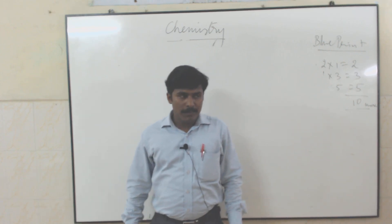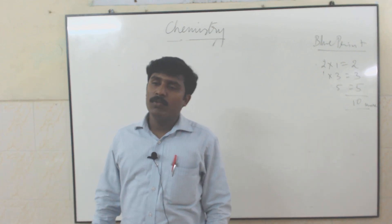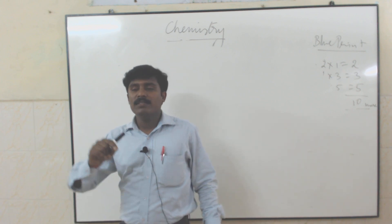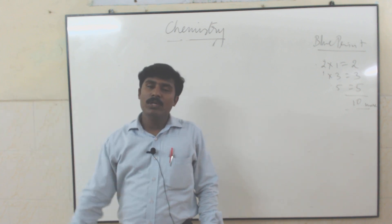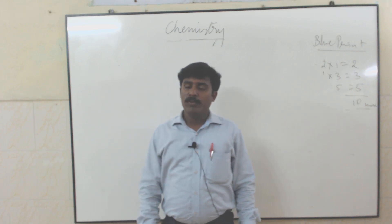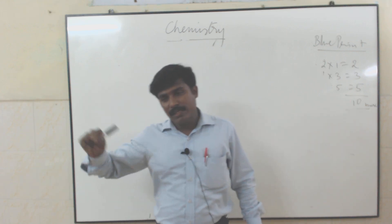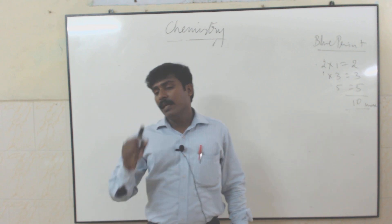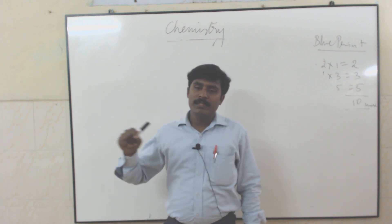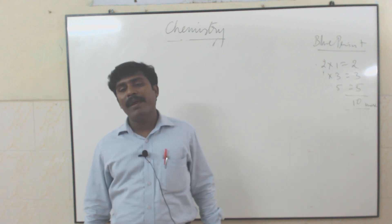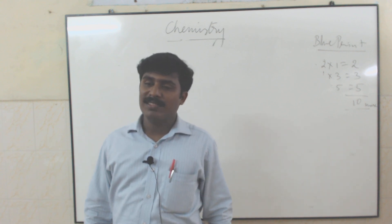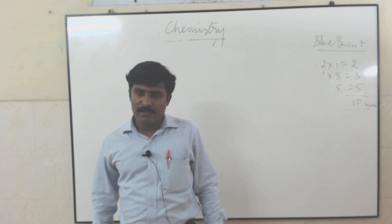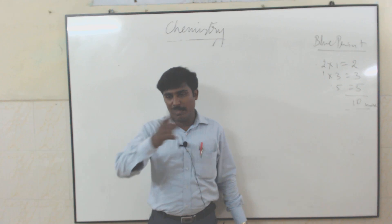For p orbital, l equals 1, so m value goes from minus 1 through 0 to plus 1 — all together 3 orientations. The p orbital splits into 3 types: px, py, pz. Each orbital holds 2 electrons, so 3 times 2 equals 6 electrons maximum in p orbital. The shape is dumbbell shape.